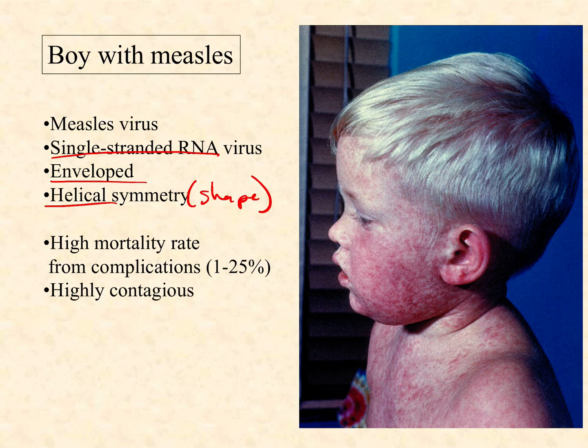Measles also has a high mortality rate, but in this case it's from complications, ranging anywhere from one in 100 to one in every four in a particular outbreak. Highly contagious, high mortality rate, and vaccine preventable. When I put these things together, I consider the ethics of a parent not vaccinating a child based on fears or misinformation. This is a very preventable disease and people die when we don't get vaccinated. So measles is another really interesting bioethical case study.